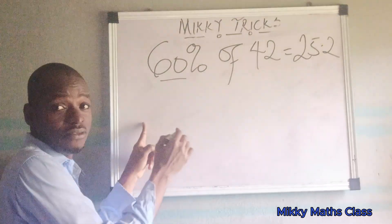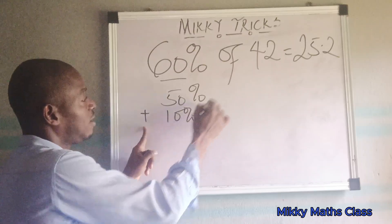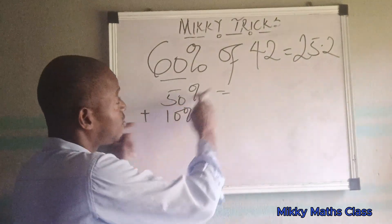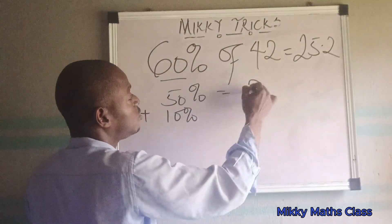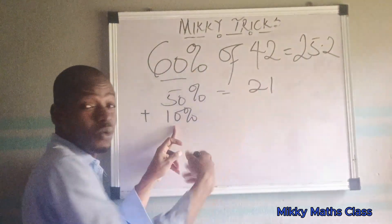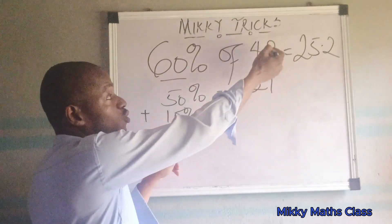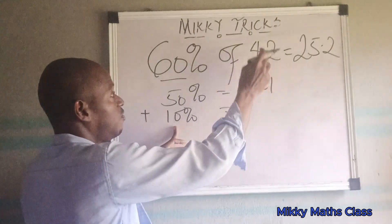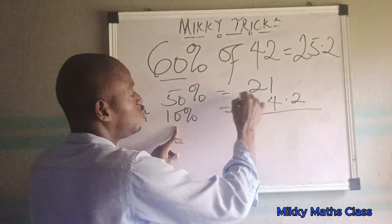60% is the same as 50% plus 10%. Now, 50% of something is just half of that number, so 50% of 42 is 21. For 10% of a number, just take the decimal point and move it one place to the left, so 10% of 42 is 4.2.